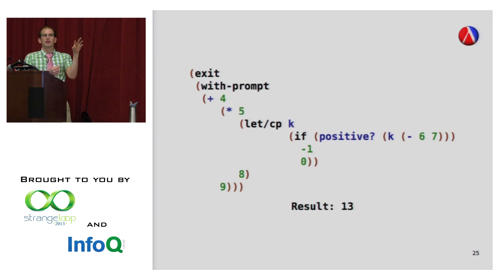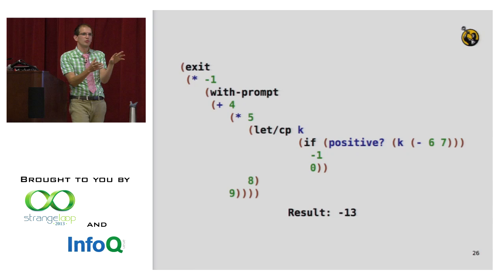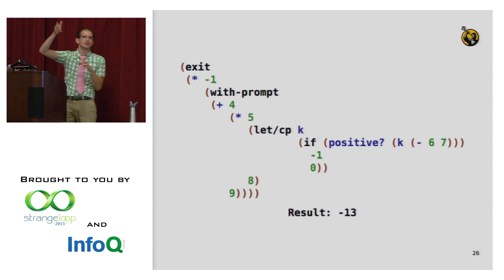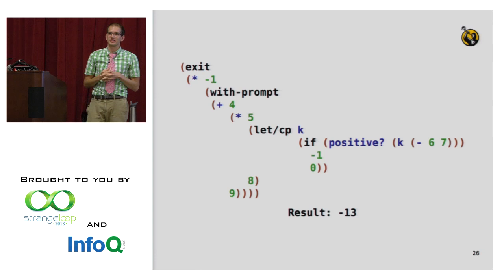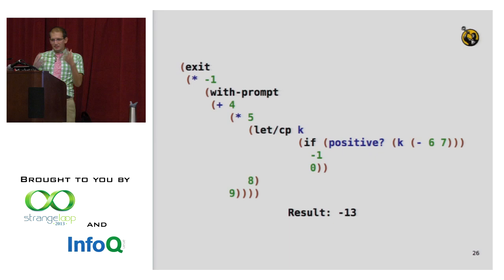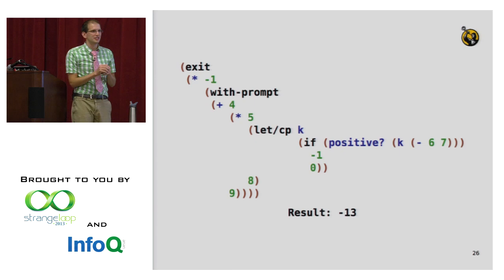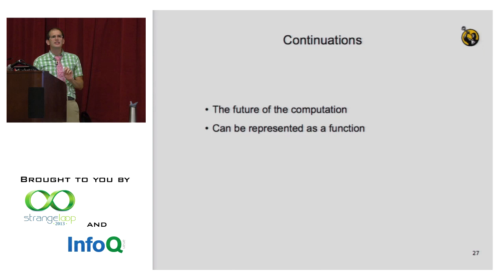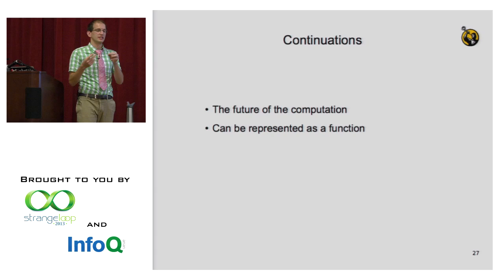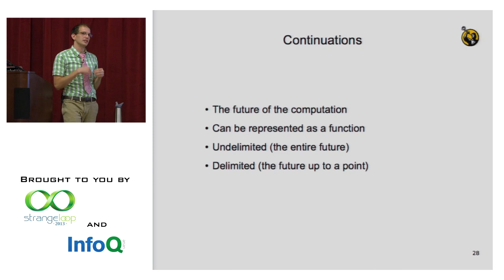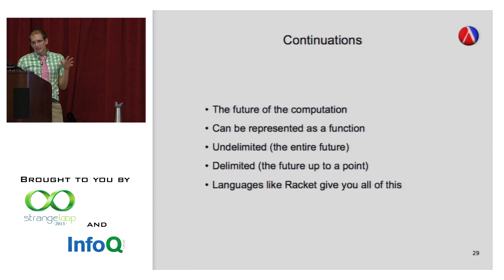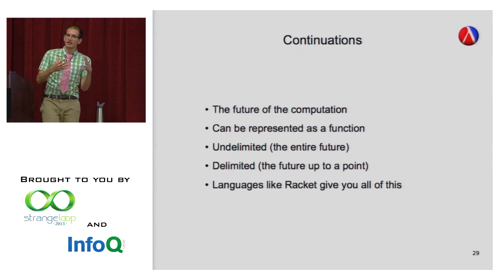With-prompt is sort of like a veil over the future that we can't see beyond. To summarize: continuations represent the future of a computation; they can be represented as functions; they come in different varieties — undelimited ones, which are the entire future, and delimited ones, which are the future up to a point. Languages like Racket give you all these wide varieties, while very few languages give you all these options.